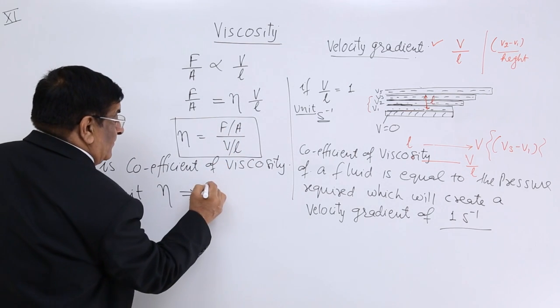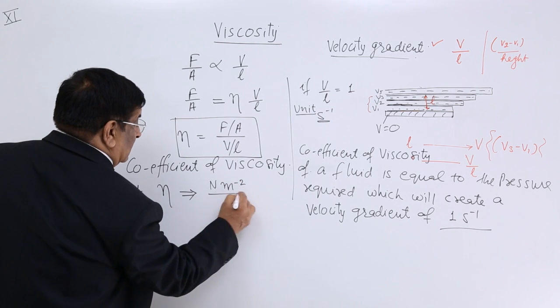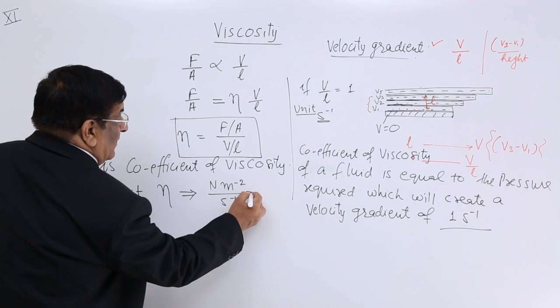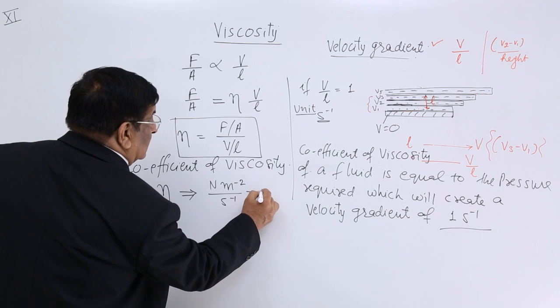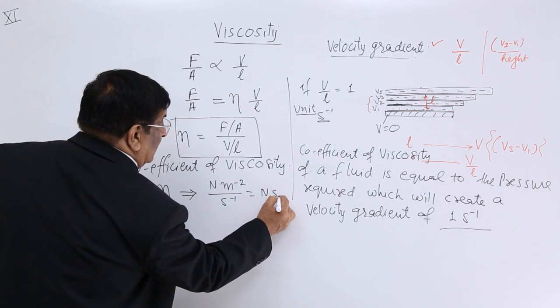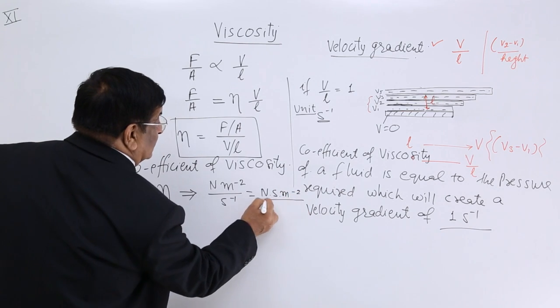So when it goes up, Newton per meter square, this is per second. When it goes up, it becomes second. So this is Newton second per meter square. It is a very strange unit.